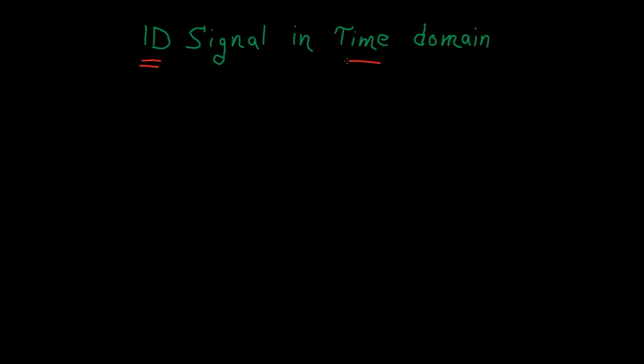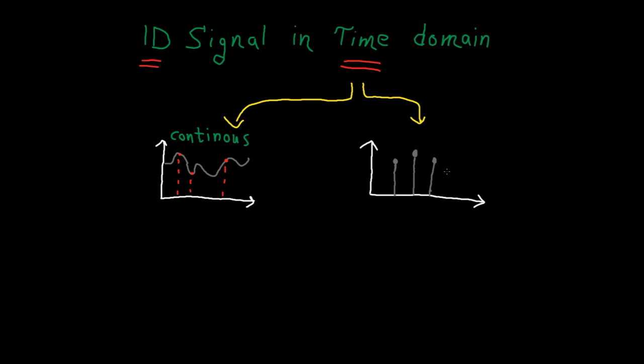Now signal in time domain can be continuous or discrete. Continuous signal is defined for all time. Basically, continuous signal is defined everywhere. On the other hand, discrete signal is just defined for some specified moments. In fact, the signal is not defined for the time in between samples. Please note that the signal in between is not zero but it's not defined.